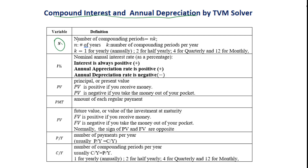N stands for number of compounding periods, which equals n times k. Here, n is the number of years, and k is the number of compounding periods per year. K equals 1 for yearly or annually compounded, 2 for half-yearly, 4 for quarterly, and 12 for monthly.